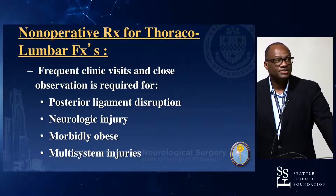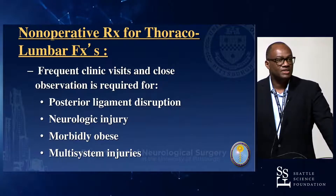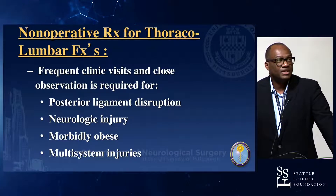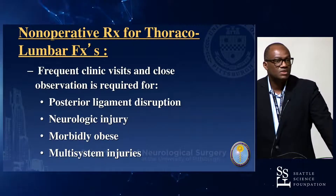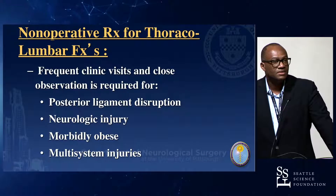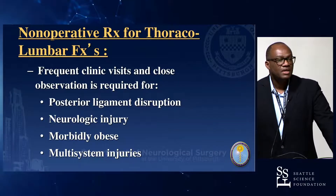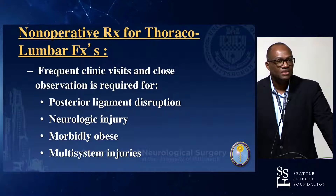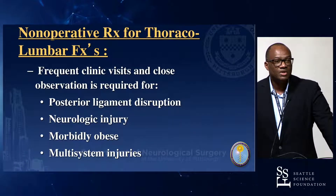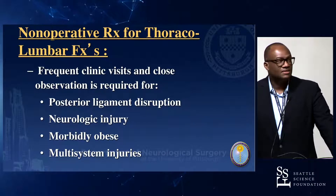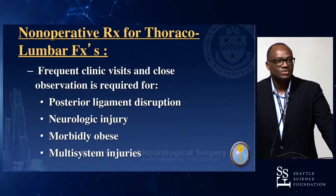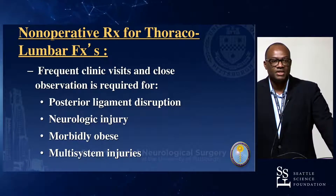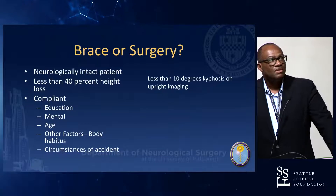Non-operative treatment for thoracolumbar fractures involves things you may not want to deal with but might be the right thing: frequent clinic visits, close observation. If somebody has posterior ligamentous disruption, you really need to follow them closely — two weeks, six weeks, etc. Even if you're bracing them, it's safe. Patients who have multi-system injuries or are morbidly obese and won't fit well in a brace but choose not to have surgery — that means more clinic visits.